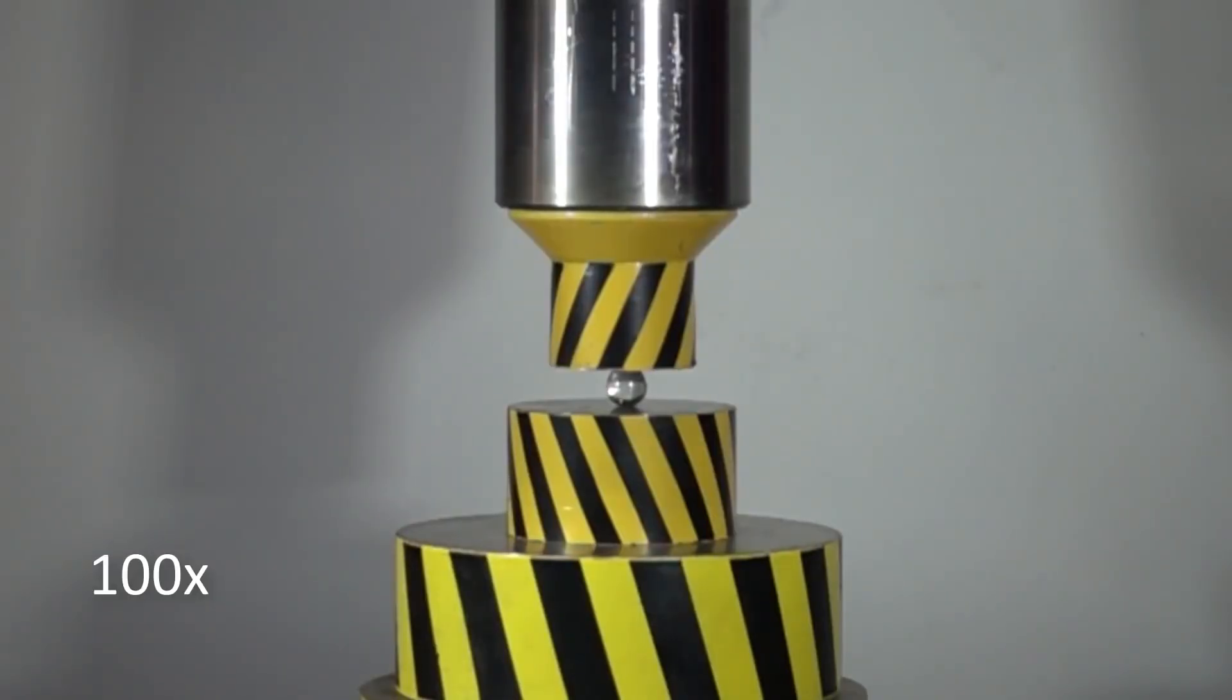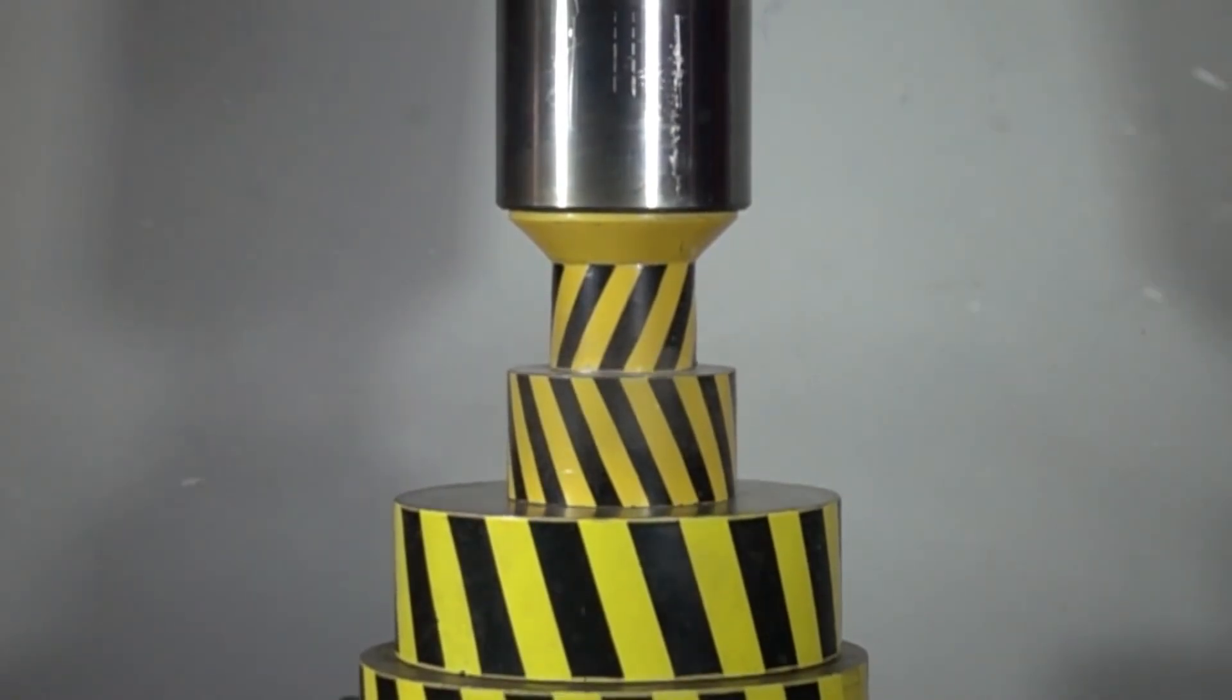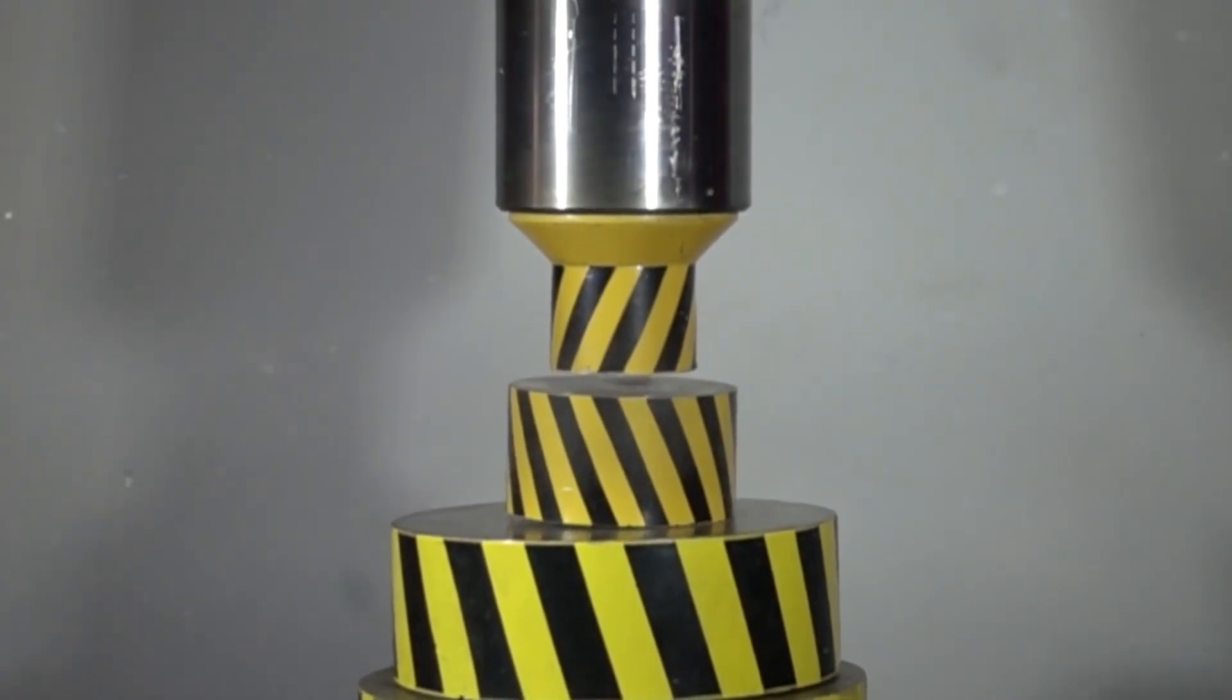But still, round glass is pretty solid and durable thing. It burst with an effort of just over 5 tons.